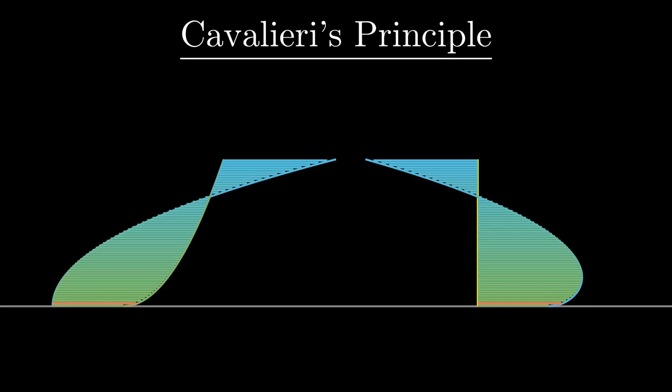Cavalieri's Principle states that if we have two regions that sit on a common base, such that lines parallel to that base intersect both regions in segments of equal length, then the two regions have equal area. The principle should be obvious, at least intuitively.